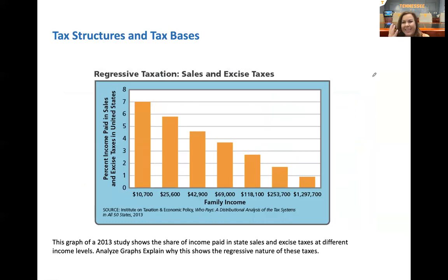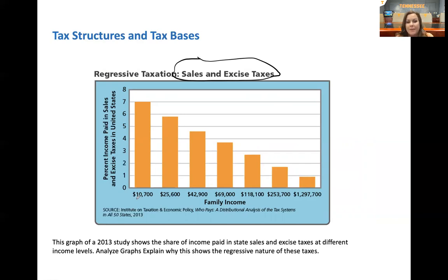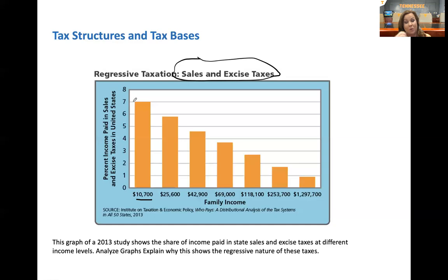Regressive taxation — this one is kind of unusual, but it applies to sales and excise taxes. The reason is: what portion of your income is that tax? If a family has a $10,700 annual income, they may be paying 7% of their income in sales tax because you've got to buy groceries, clothes, cars — basic necessities. A family of four on $10,700 probably has the same needs as a family of four on a million dollars. But if they bought the exact same things and paid the exact same amount of sales tax, that percentage is going to be much smaller when you're making $1.2 million than if you're making $10,000. That's where sales tax becomes regressive.